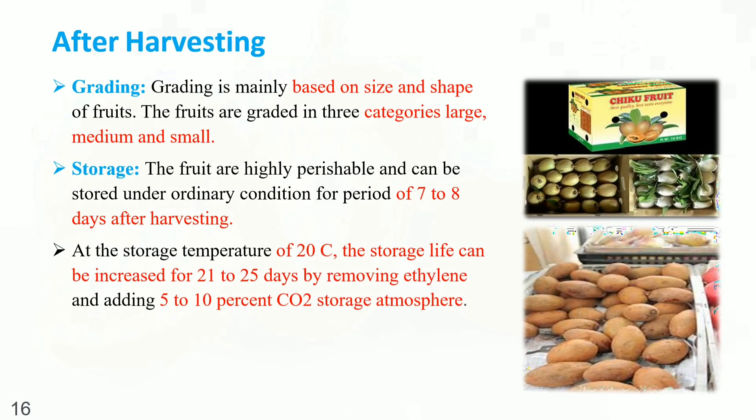After harvesting. Grading is mainly based on the size and shape of fruit. The fruits are graded in 3 categories: large, medium, and small. Storage: The fruits are highly perishable and can be stored under ordinary conditions for 7 to 8 days after harvesting. At a storage temperature of 20 degrees Celsius, the storage life can be extended to 21 to 25 days by removing ethylene and adding 5 to 10% CO2 to the storage atmosphere.